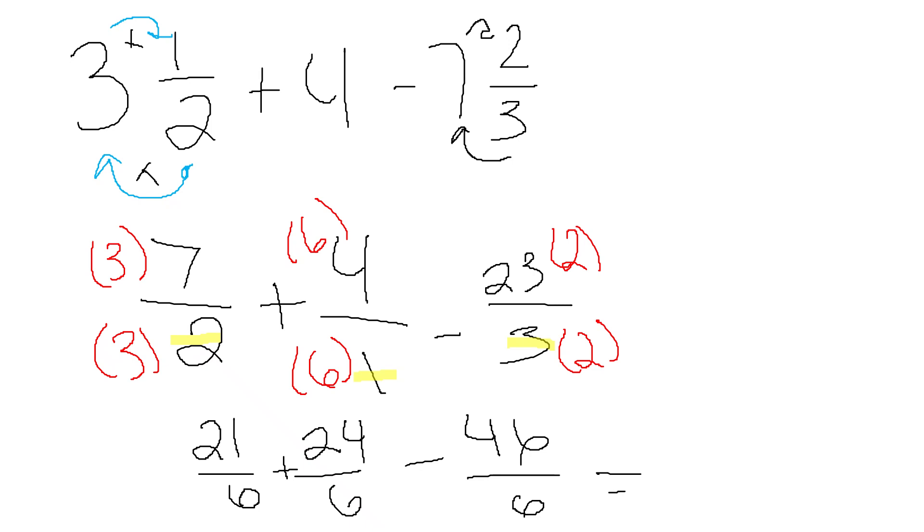And now I simply add or subtract my tops, keep my bottom. So 21 plus 24 is 45 minus 46 is negative one. So my answer is negative one over six.